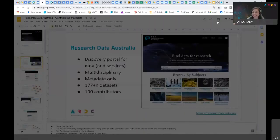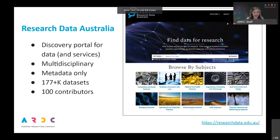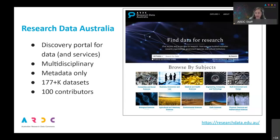In Research Data Australia you can see there's a keyword search box, so you can throw in any words and find data across all those disciplines. You can also browse by the subject groupings we have for search results in a particular subject area. We also have an advanced search option that allows you to more finely refine and filter by things like temporal or spatial characteristics of the data, or the subject, or perhaps the license type or the access type.